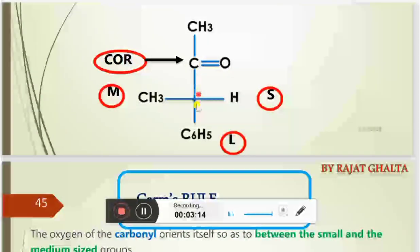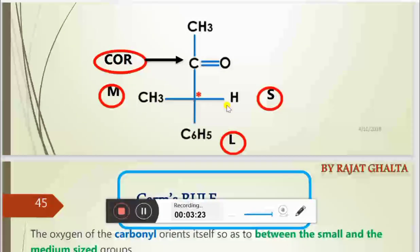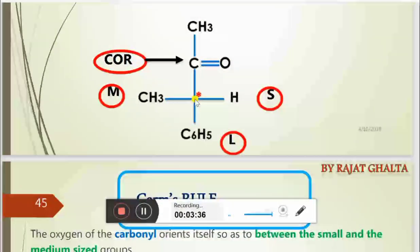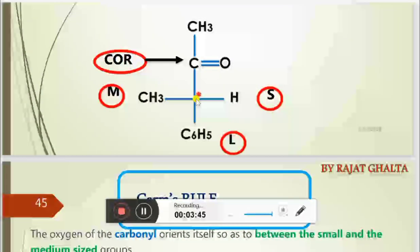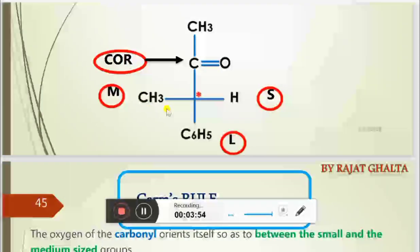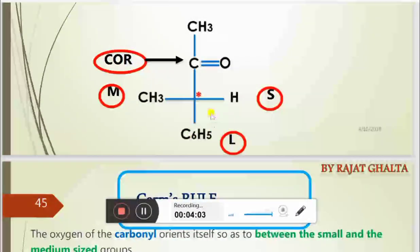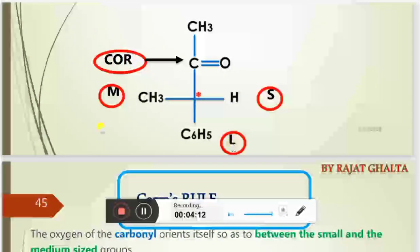There are certain flaws in both models — we can't say which is best — but sometimes Cram's model is applicable and sometimes Felkin's model works better. Before making the nucleophilic attack, both Cram and Felkin have divided the substituents present at the stereocenter adjacent to the carbonyl group into three groups based on bulkiness: small, medium, and large.